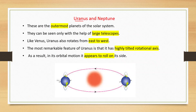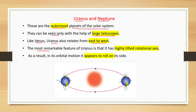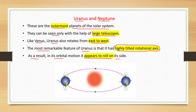Uranus and Neptune are the outermost planets of the solar system and can be seen only with the help of large telescopes. Like Venus, Uranus also rotates from east to west. The most remarkable feature of Uranus is that it has a highly tilted rotational axis. As a result, in its orbital motion, it appears to roll on its side.